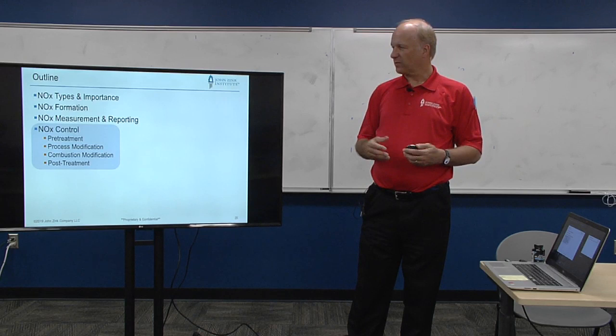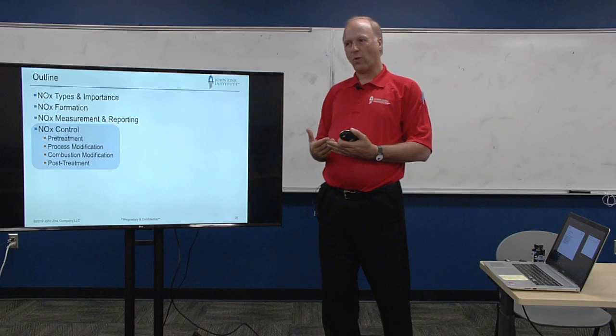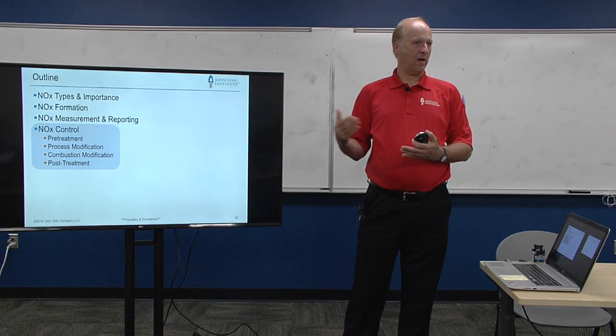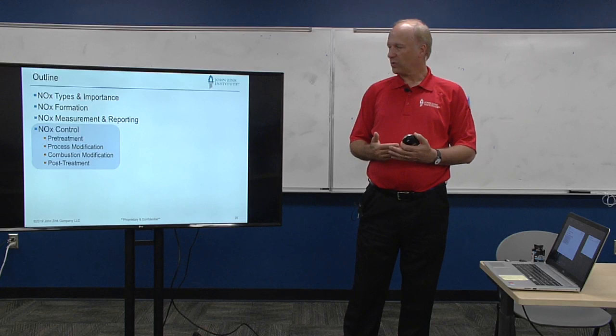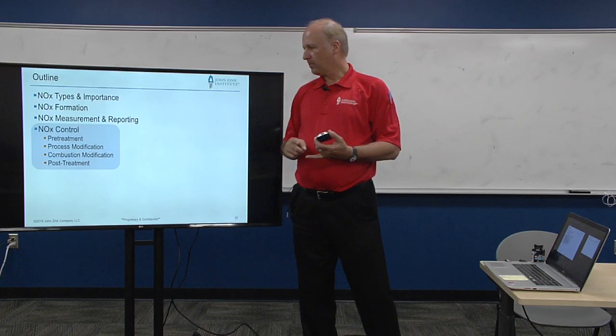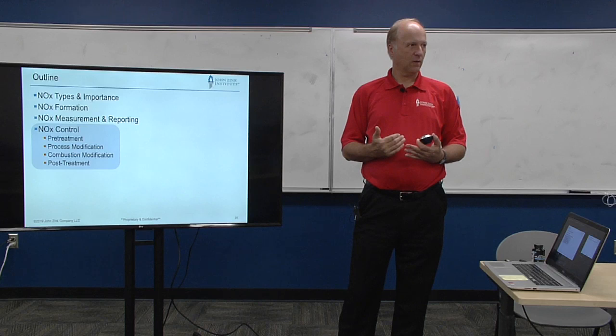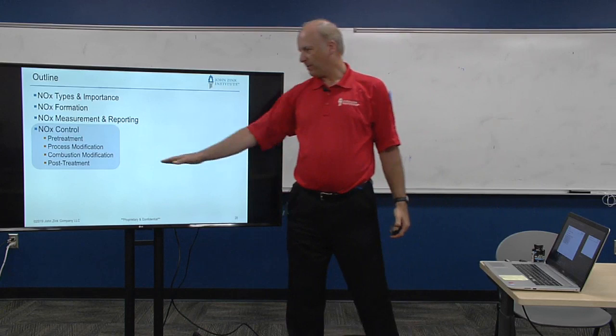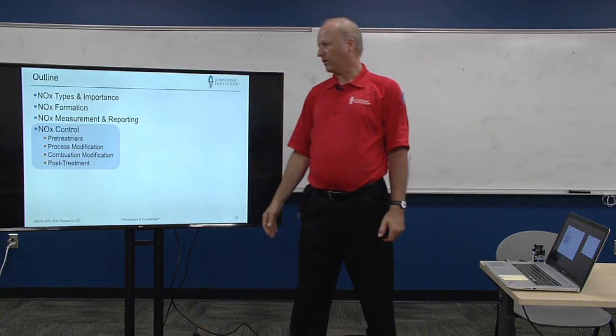The last topic for today — and where we'll spend most of our time — is how to minimize NOx. There are four general ways of reducing pollution: pre-treatment, process modification, combustion modification, and post-treatment. I'll give examples of all four for NOx, but we're going to spend by far the most time on combustion modification — what can we do to the burners to reduce NOx?